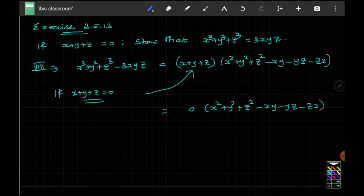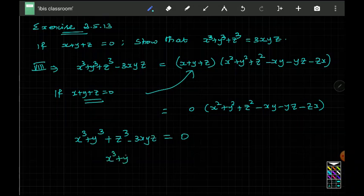So this multiplied by anything becomes 0. That means on the left hand side, you are having x cube plus y cube plus z cube minus 3xyz is 0. Then x cube plus y cube plus z cube, and this one you take it to the other side becomes plus 3xyz.